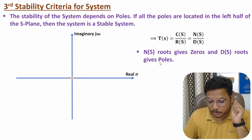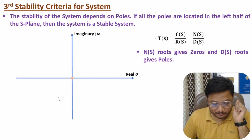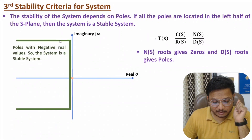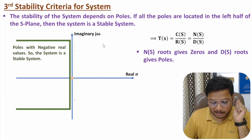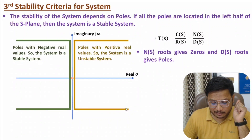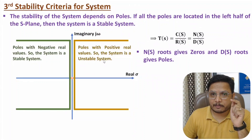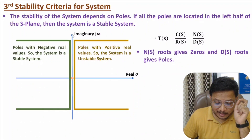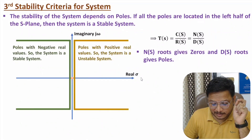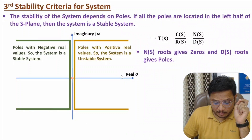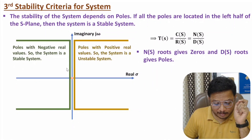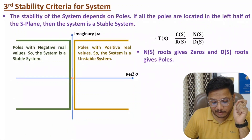If the location of poles is in the left half of the S-plane, then the system is stable. If the pole location is in the right half of the S-plane, then we have an unstable system. In the S-plane, the vertical axis represents the imaginary value and the horizontal axis represents the real value. The real value is negative in the left half of the S-plane and positive in the right half of the S-plane.